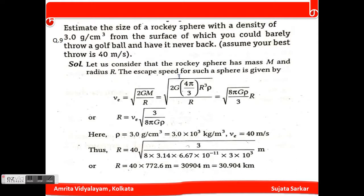After putting all the values we get that this is 40 times square root of 3 divided by (8 × 3.14 × 6.67 × 10⁻¹¹ × 3 × 10³), which equals 40 × 772.6 meters or 30.904 kilometers.